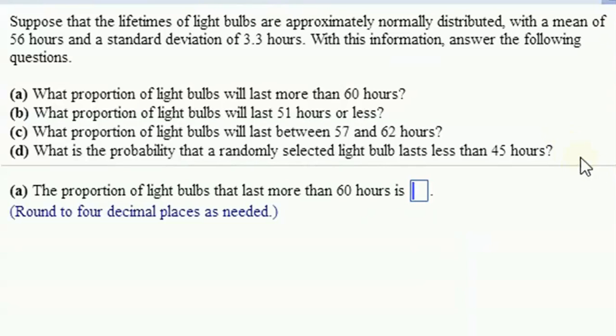Suppose the lifetimes of light bulbs are approximately normally distributed with a mean of 56 hours and a standard deviation of 3.3 hours. We want to calculate a number of these probabilities.